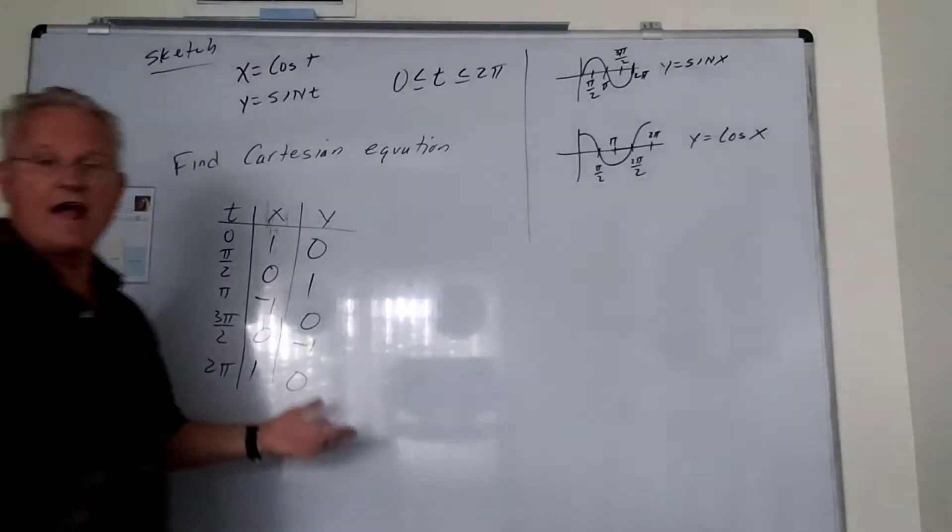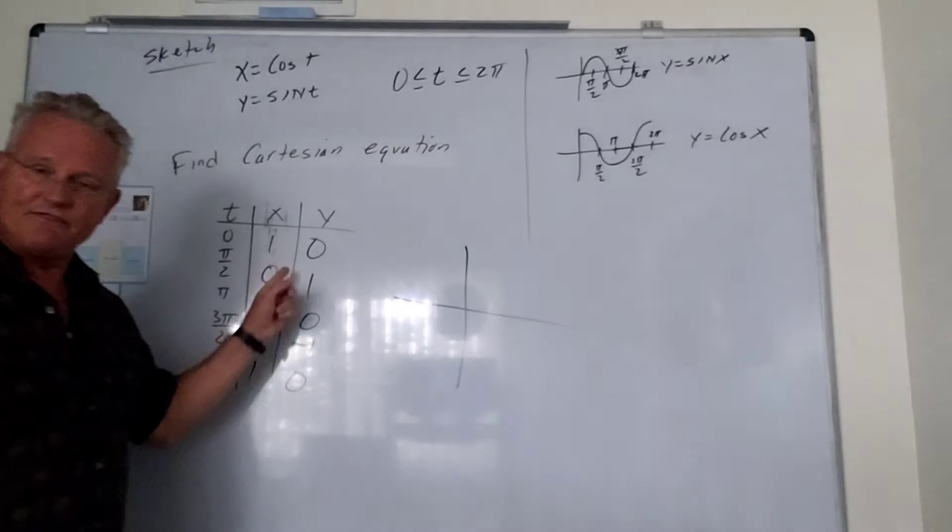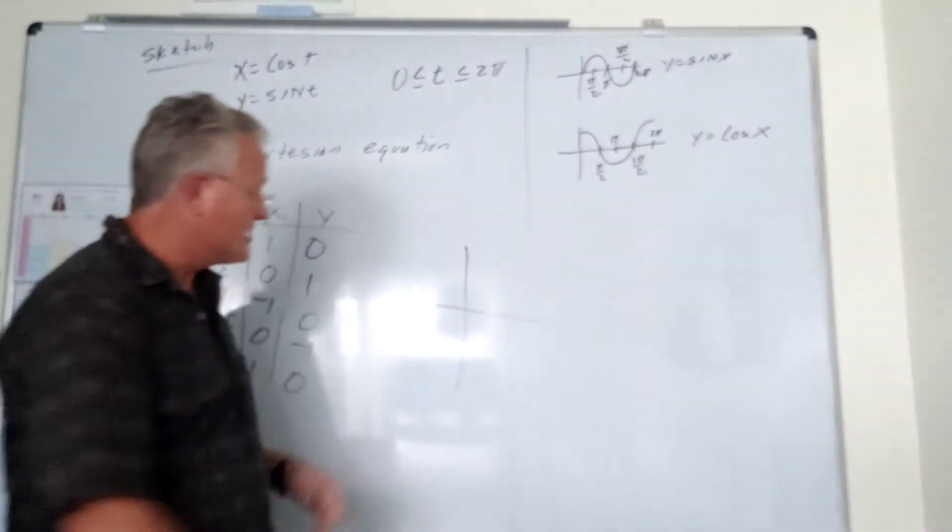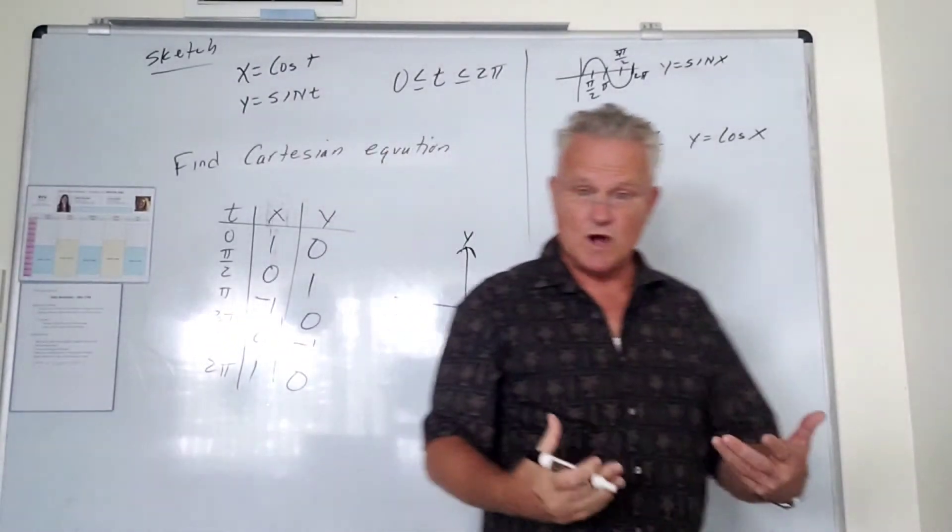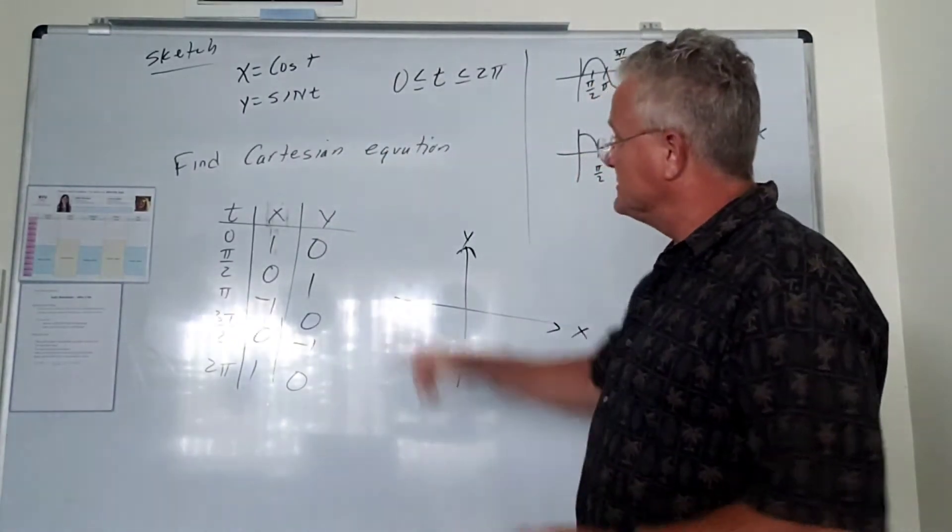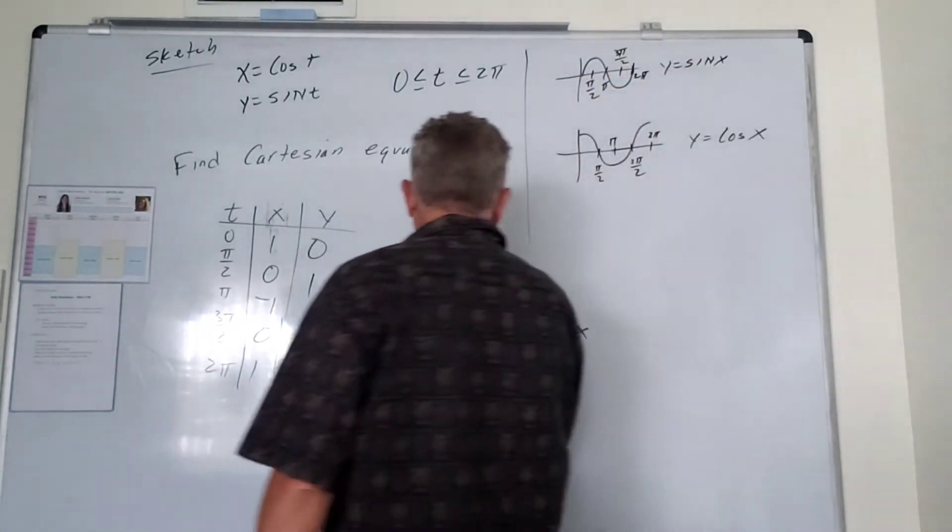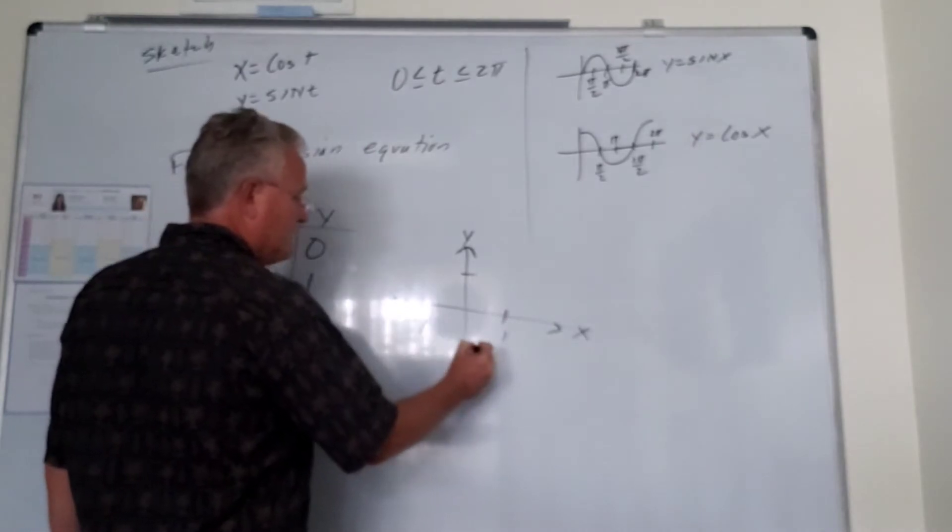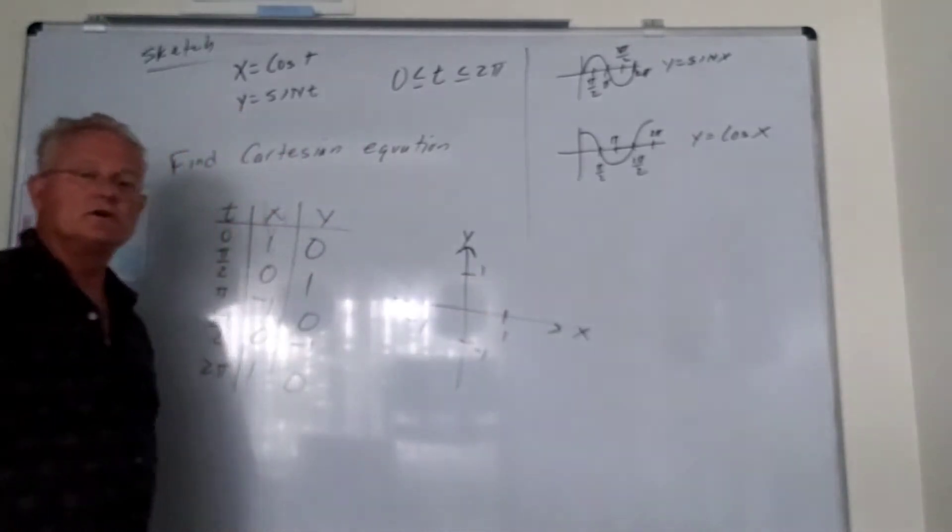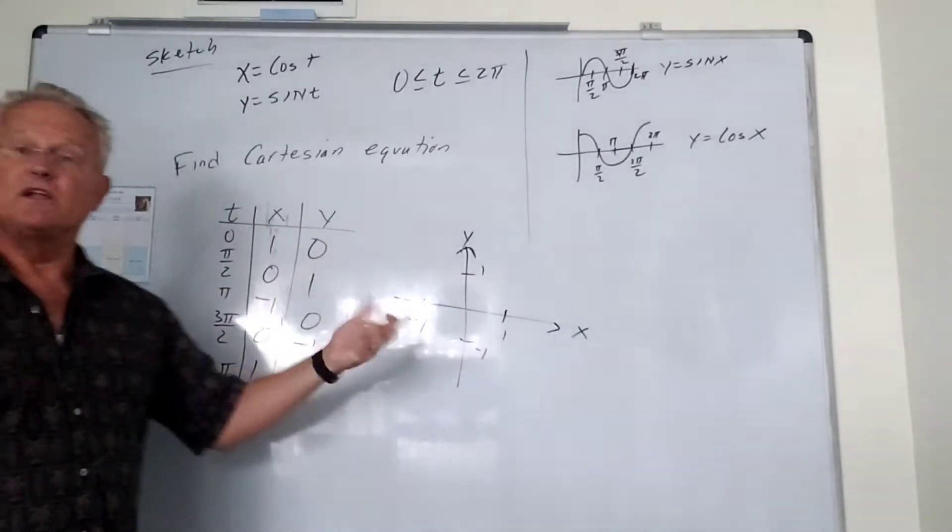Now we can graph these by just plotting the points. And notice, as I plot these points in the Cartesian plane, this is the x, y. We're plotting these in the x, y coordinate plane, the Cartesian plane. So what we want to do here, so this is x is 1, negative 1, y is negative 1 and 1. Keep track of the direction in which our points are plotted.